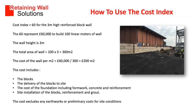If you take a 3m high reinforced block wall, the cost index equals 60. The 60 represents £60,000 to build 100 linear metres of wall. The wall height is 3 metres. The total area of wall equals 100 times 3 equals 300 square metres. The cost of wall per square metre equals £60,000 divided by 300 equals £200 per metre square.